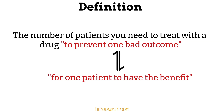For example, preventing a stroke. How many people do we have to give the drug to in order to have the desired outcome? Before we go over the example and the formula, ask yourself: if you were a researcher testing the benefit of a drug, would you want the number needed to treat to be high or low?